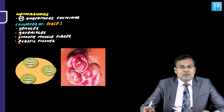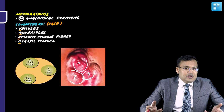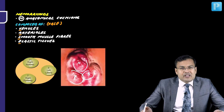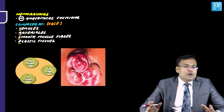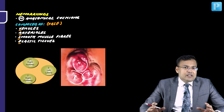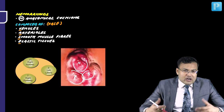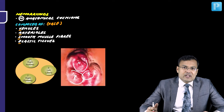Hemorrhoids are the most common cause of lower GI bleeding — usually painless and small in amount, sometimes 1 to 5 ml. The most common cause of significant lower GI bleeding is colonic diverticula, and the most common cause of occult or obscure lower GI bleeding is vascular ectasia or angiodysplasia.